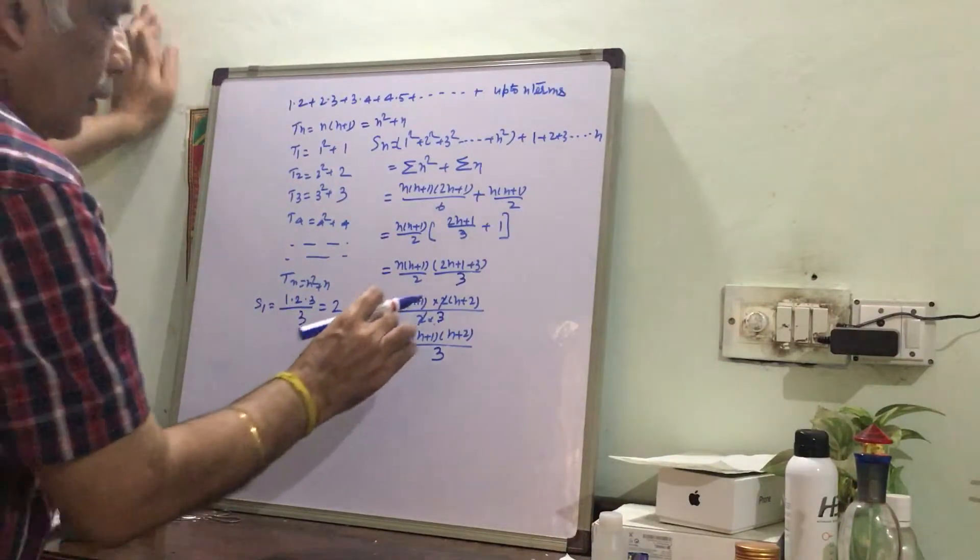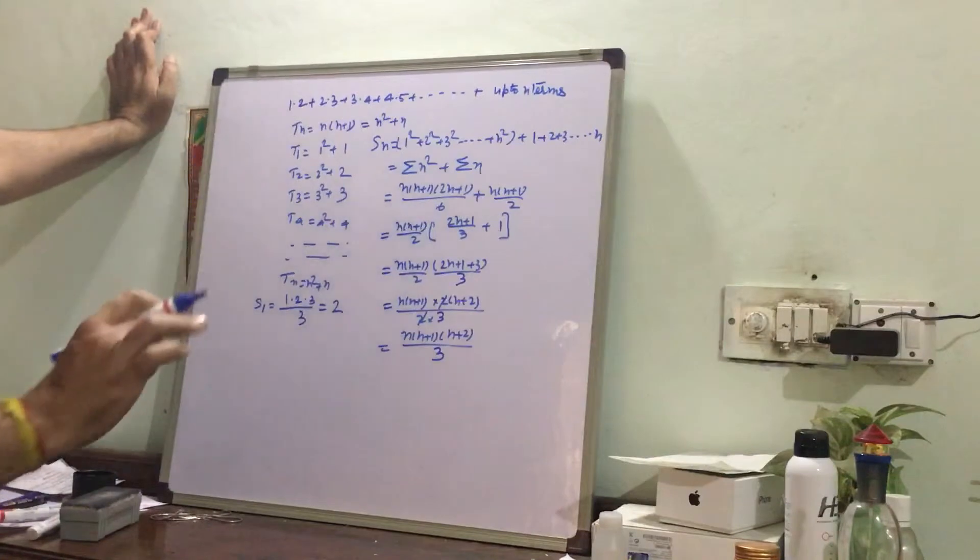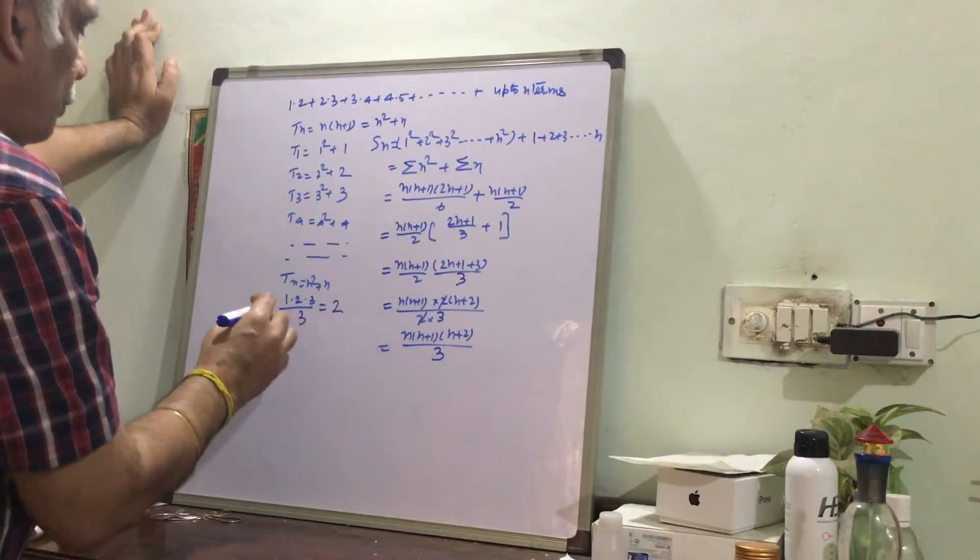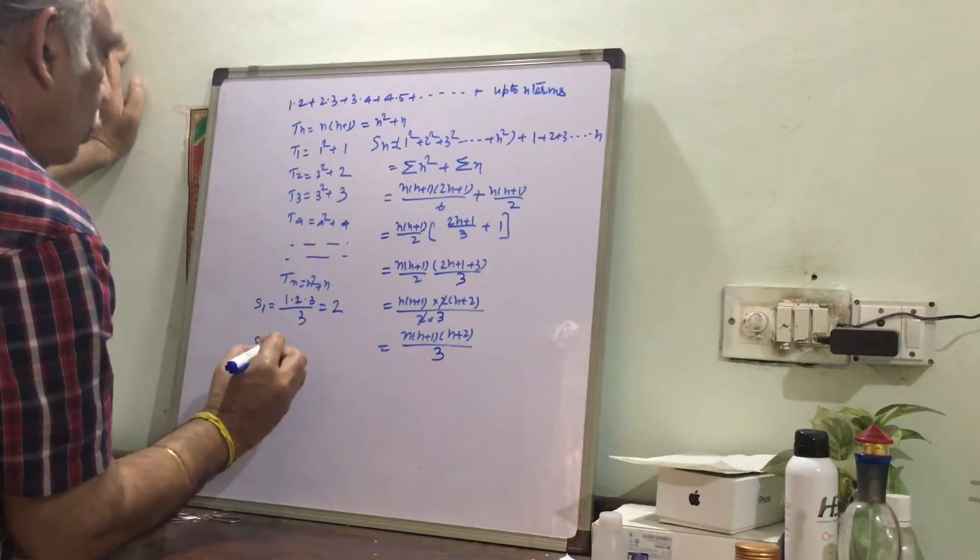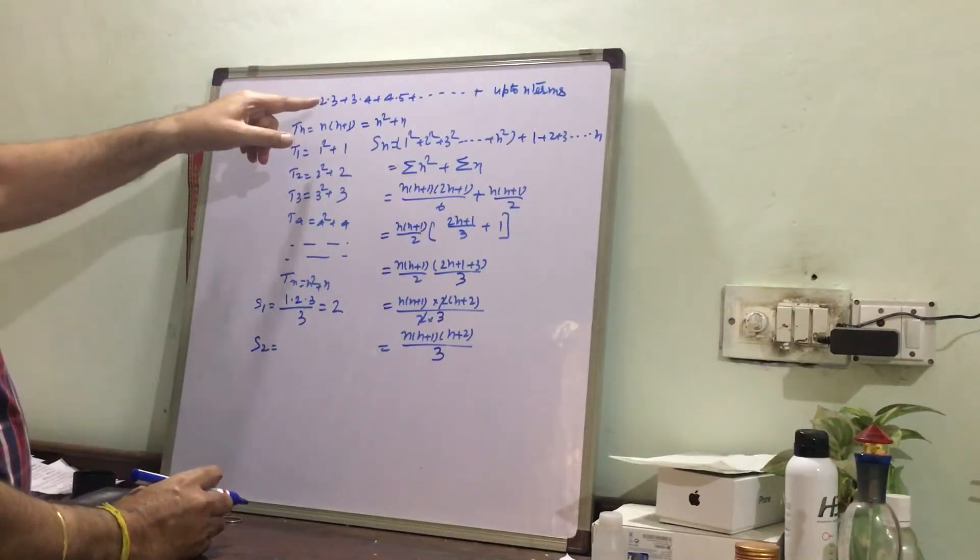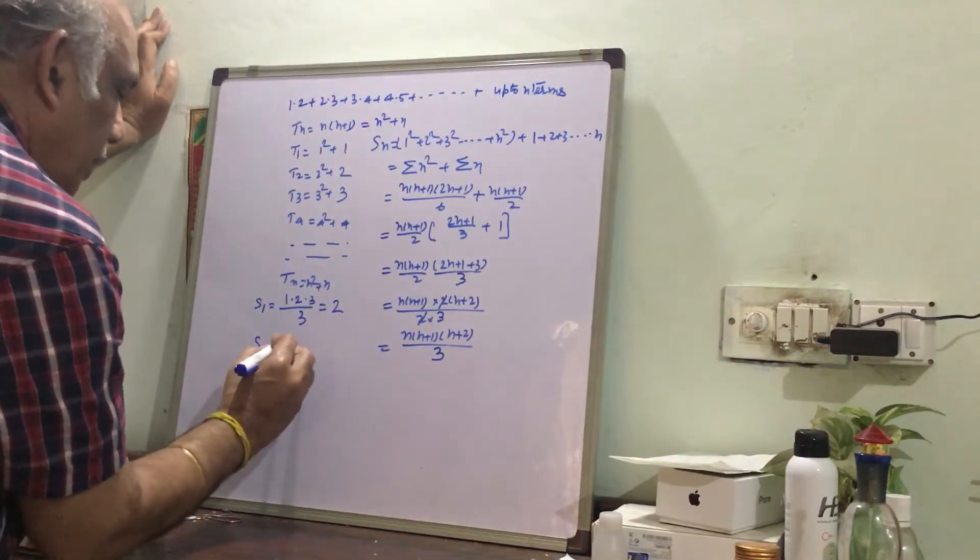Now this is the correct answer, because I thought this n is 3. So we put 1, we are getting 2; in case of n=2, we are getting 2. Now S2 equal to 2 plus 3×2, this is 8. Let's see whether we are getting 8 or not. 2 into 3 into 4 by 3 equal to 8.